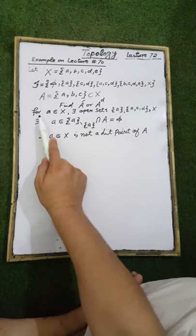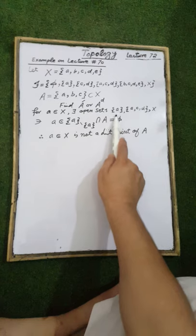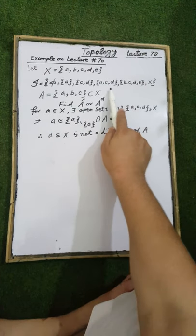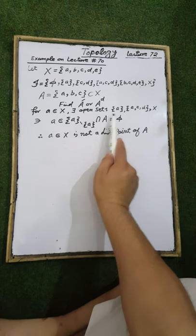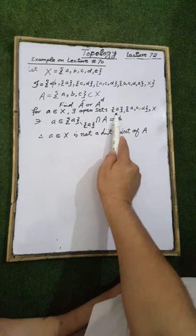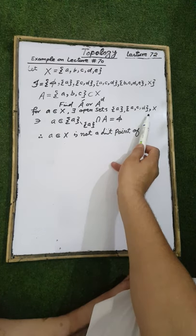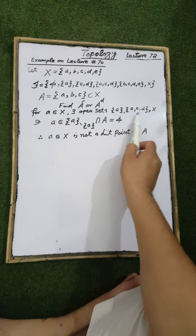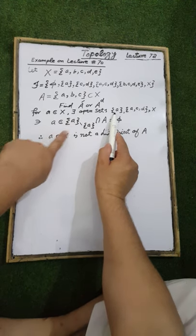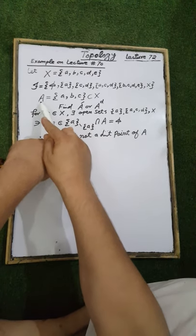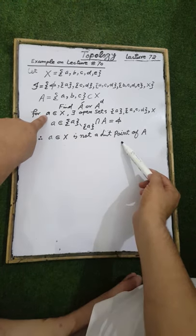For an element a belonging to the ground set X, there exist open sets containing the element a. By the definition of a derived point, limit point, or accumulation point of the set A, each open set containing the element a must contain at least one element of the set A other than a itself. However, these open sets do not contain another element of the set A.